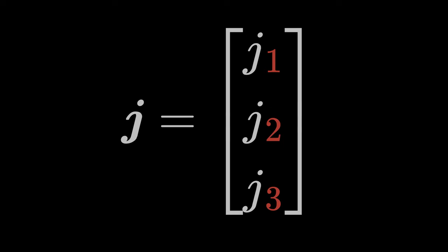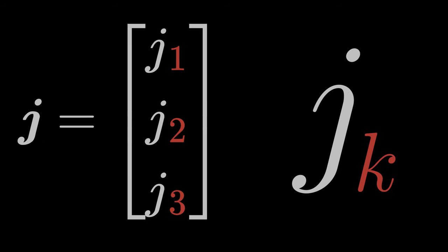In order to work with them theoretically, for example, to derive equations or simply to formulate a physical theory, the tensors are formulated compactly in index notation. You are probably already familiar with this concept from vector calculus. Instead of writing out all three components of the first-order tensor, we write them with an index K.